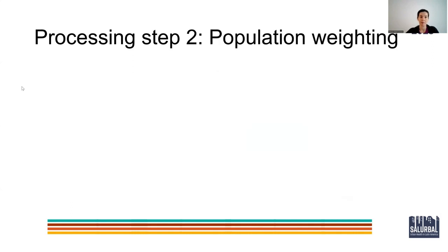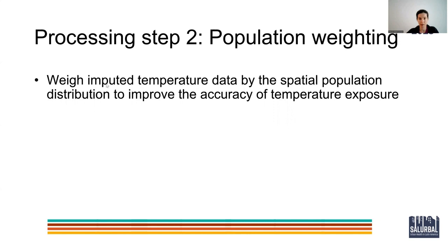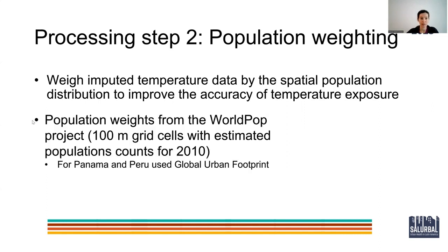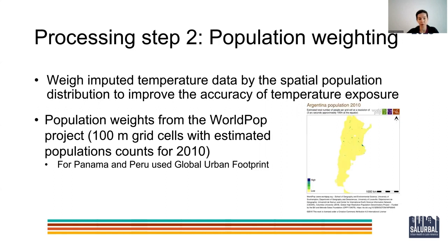The second step involved weighting the imputed temperature data by the spatial population distribution in order to create more accurate measures of temperature exposure. We used population weights from the WorldPOP project, which represented 100 by 100 meter grid cells with estimated population counts for 2010. We used WorldPOP for all countries except Panama and Peru, for which we used Global Urban Footprint, because the WorldPOP estimates of the spatial population distribution for these two countries were not reliable. Essentially, we combined the imputed gridded data with the gridded population data to create the population-weighted temperature data.